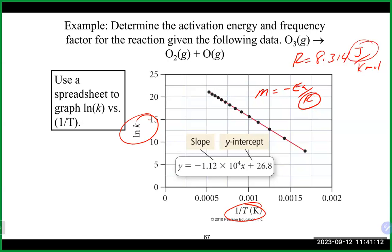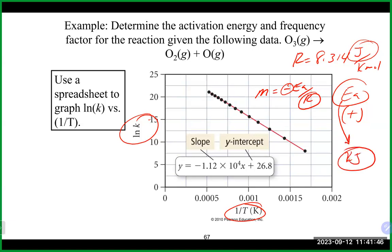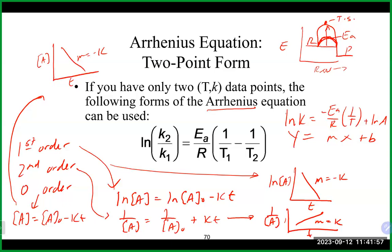When you solve using this equation you get units of joules. The slope is negative, and combined with the negative sign in the equation, activation energy comes out as a positive number, as it should always be. Activation energy is typically reported in kilojoules, which is the most common unit. This is especially important when using the two-point version of the Arrhenius equation.